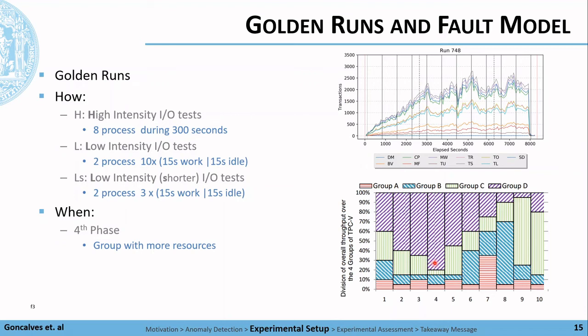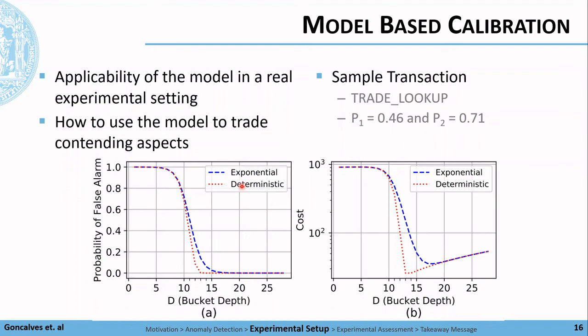After, we decided to inject those attacks on different phases: on the fourth, where the groups with more resources contribute more to the throughput, and in the sixth phase, where the overall throughput reaches its peak.